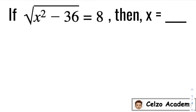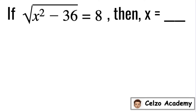If the square root of x squared minus 36 is equal to 8, then what is the value of x? The given problem involves a radical equation. In solving radical equations, we need to do the inverse operations. The inverse operation for square root is taking the square, so in this problem we need to take the square of both sides.